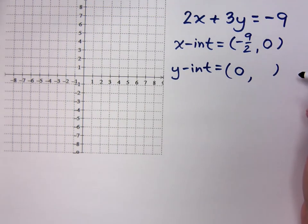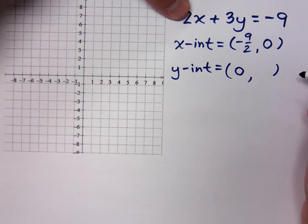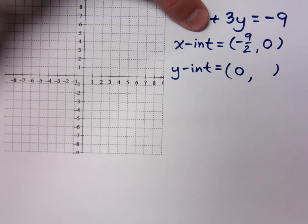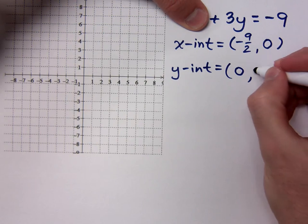For the y-intercept, what do you know? So if x is 0, that means this guy is gone. 2 times 0 is 0, and I see that 3y equals negative 9, which means y equals negative 3.